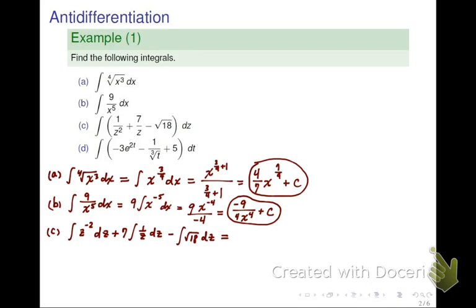Once we have that, we're going to use the respective rules on each of those integrals. For the first one, it satisfies the power rule. Again, we're going to add 1 to the power and divide it by the new power. Negative 2 plus 1 is negative 1. Therefore, we get z to the negative 1 divided by negative 1.